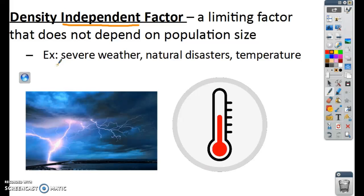The tornadoes, natural disasters, severe weather, it's all independent of density. It doesn't matter how dense the population is, it's still going to affect them. Same thing with temperature. Maybe it gets really hot one year and the plants in your garden can't survive. Well, it doesn't matter how many plants you have. Temperature is not going to influence, is not going to be any different. If you have a lot of plants or little plants, the plants are still going to die. So density-independent factor doesn't depend on population size or density.